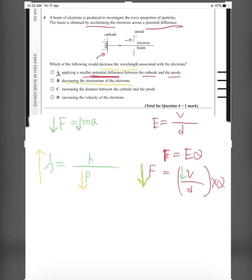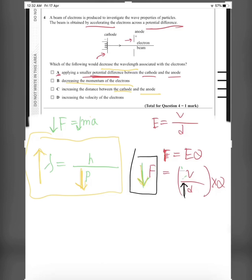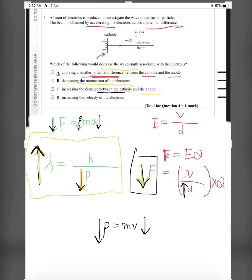Part B: decreasing the momentum of the electrons has the same effect — decreasing momentum would increase the wavelength, so B is not the answer. Part C: increasing the distance between the cathode and the anode lowers the force (since E = V/d), which means lower acceleration, lower speed, lower momentum (p = mv), and therefore higher wavelength. So C is also not the answer.